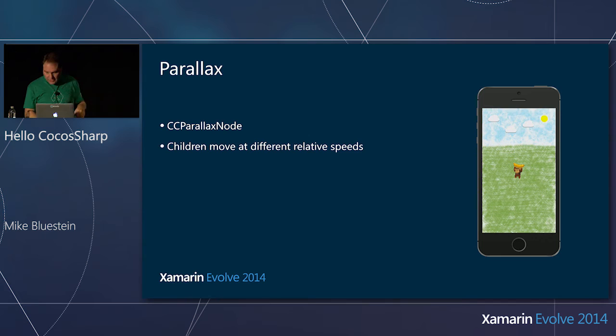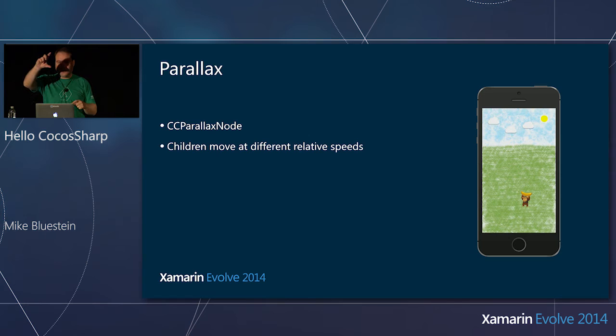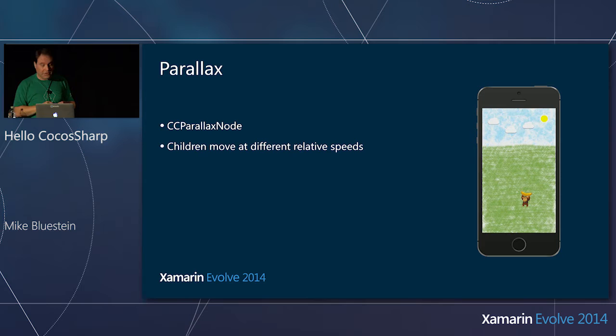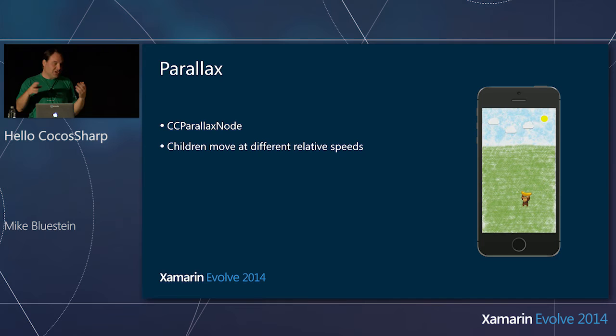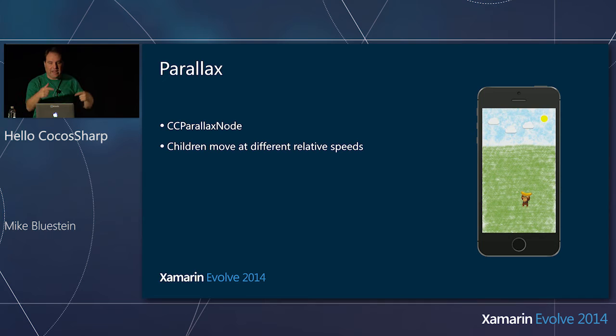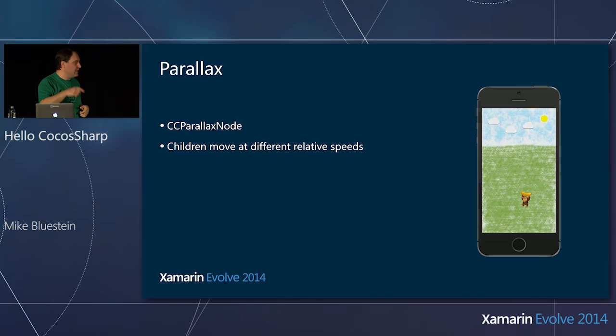You can apply parallax to any node. What I did here — I'm moving the monkey up and down and taking the Y position, moving the clouds at different rates. It's trivial with CC Parallax Node. You just put this node in your scene, add sprites into the parallax node, and set the ratio — basically how they should move relative to each other. I'm not doing any movement code on the clouds; I'm just moving the monkey and saying clouds should move relative to the monkey's Y delta.